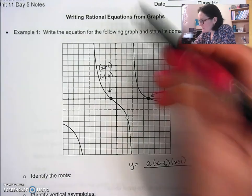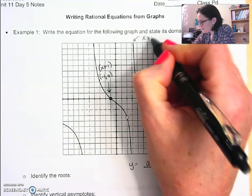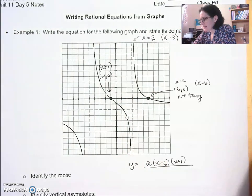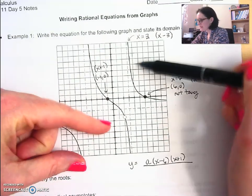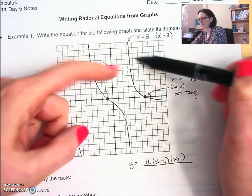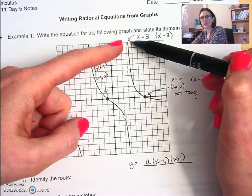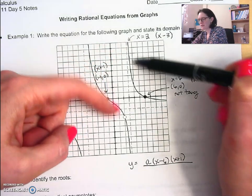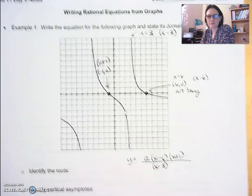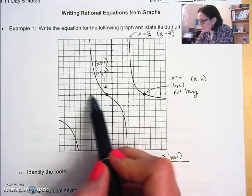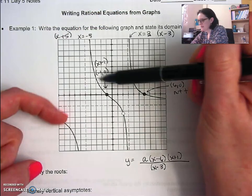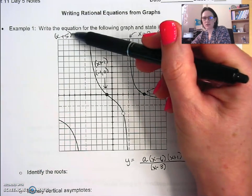For the vertical asymptotes: x = 3 comes from the factored form (x − 3). You can see the graph is going away on opposite sides of the asymptote — if it were coming together on both sides, we'd square that factor, but since it's going away, it's not squared. Similarly, the vertical asymptote x = −5 comes from (x + 5), and since it's also going away on both sides, we don't square that factor either.